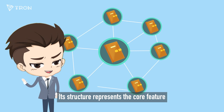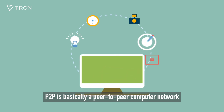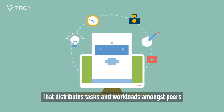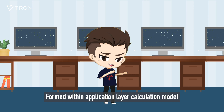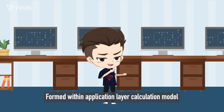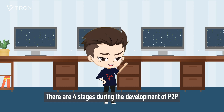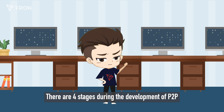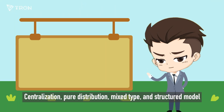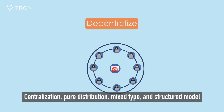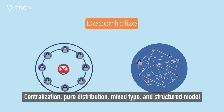P2P is basically a peer-to-peer computer network that distributes tasks and workloads amongst peers, formed within an application layer calculation model. There are four stages during the development of P2P: centralization, pure distribution, mixed type, and structured model.